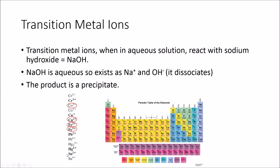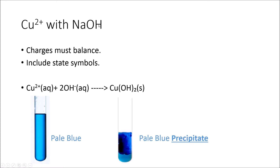All of these transition metal ions form a precipitate when they react with OH- from sodium hydroxide. The only four you need to know — in terms of ionic equations and colour changes — are Co2+, Cu2+, Fe2+, and Fe3+. The two rules for writing these ionic equations are: make sure your charges balance, and make sure you include your state symbols. It's essential to state that a precipitate forms.